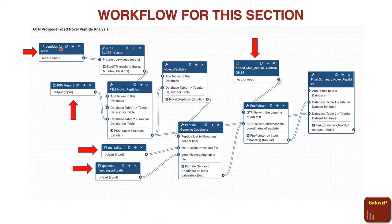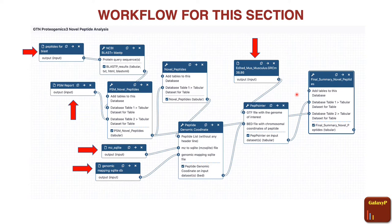Your workflow looks something like this. The arrow marks pointed here are basically the inputs required to run your workflow. As mentioned before, there are peptides for the BLAST-P analysis, the PSM report, the mz2sqlite file, the genomic mapping SQLite file, and the edited Mus musculus file, which you obtain from running the first tutorial workflow. Now let me do a hands-on overview of the workflow.